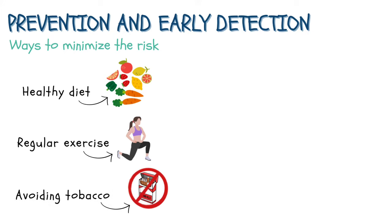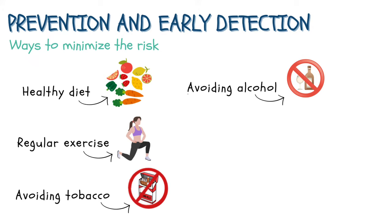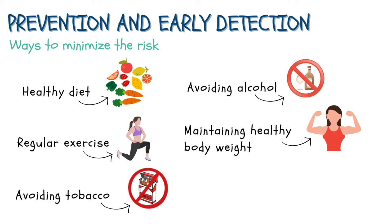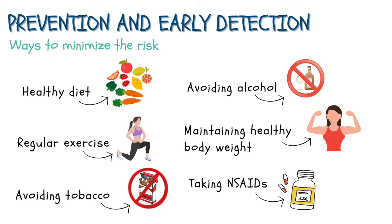Avoid tobacco products and alcohol — it's best to be alcohol-free in general. For those who can't, the number of drinks should be limited to 1 per day for women and 2 per day for men. Maintain a healthy body weight, generally meaning a BMI between 18.5 and 25. Taking non-steroidal anti-inflammatory drugs (NSAIDs) — a daily low dose of aspirin or other NSAIDs such as ibuprofen (Advil) and naproxen (Aleve) — may help reduce your risk of colorectal cancer and polyps. Please note that there are risks associated with taking aspirin daily, and it is recommended that you discuss the potential risks and benefits with your doctor before starting therapy.